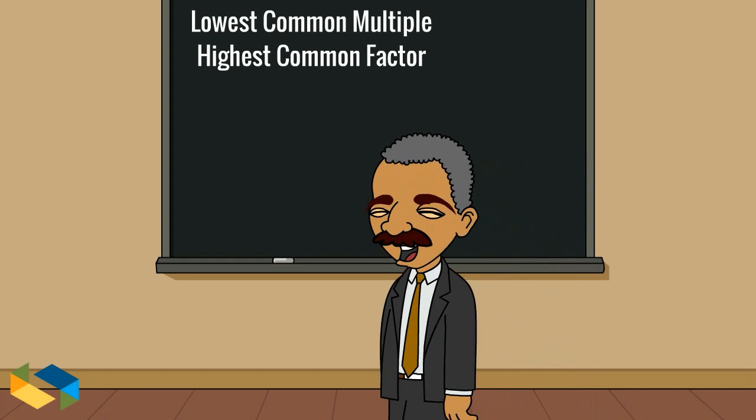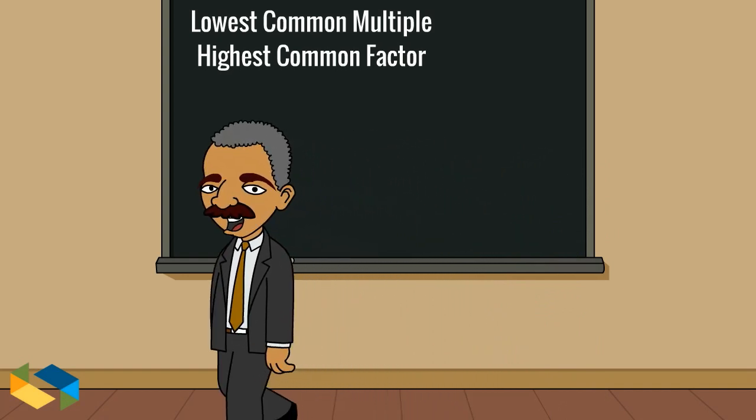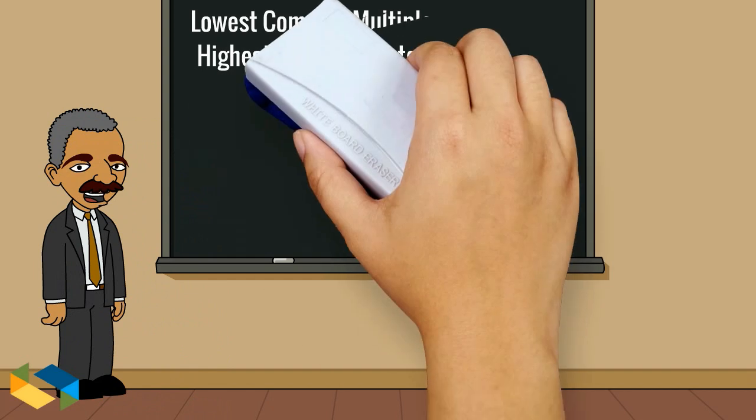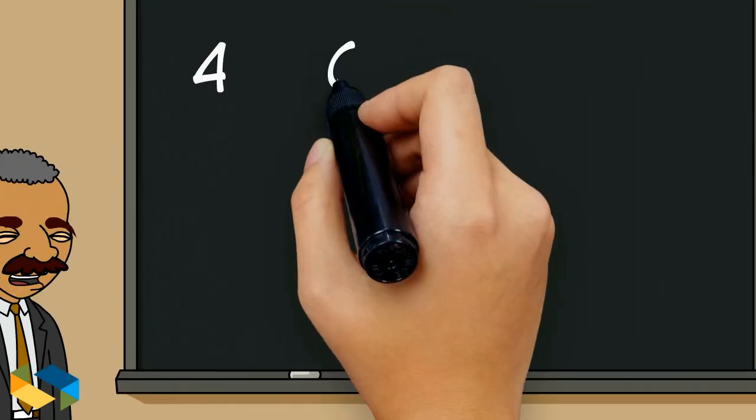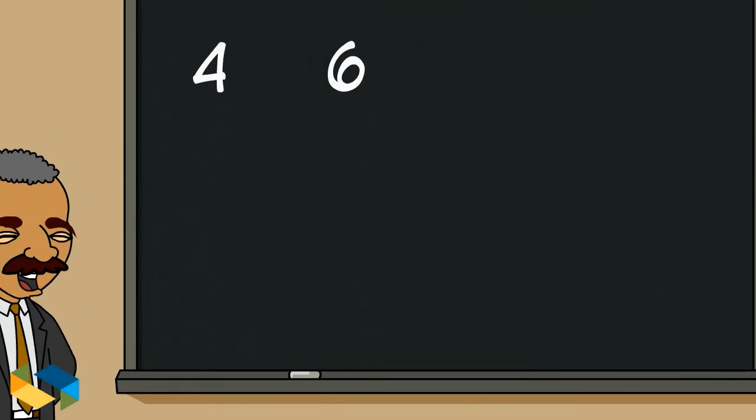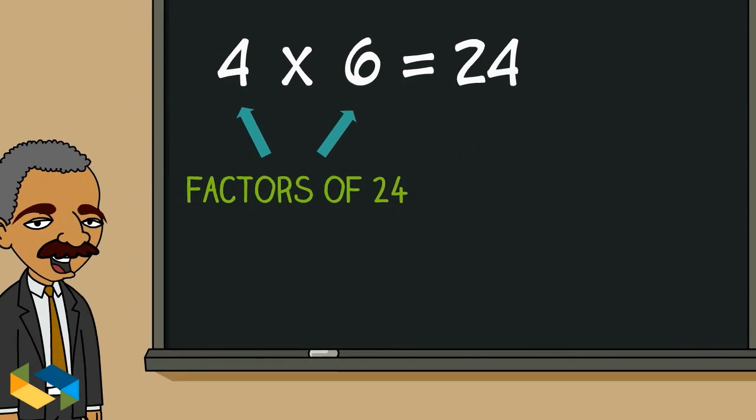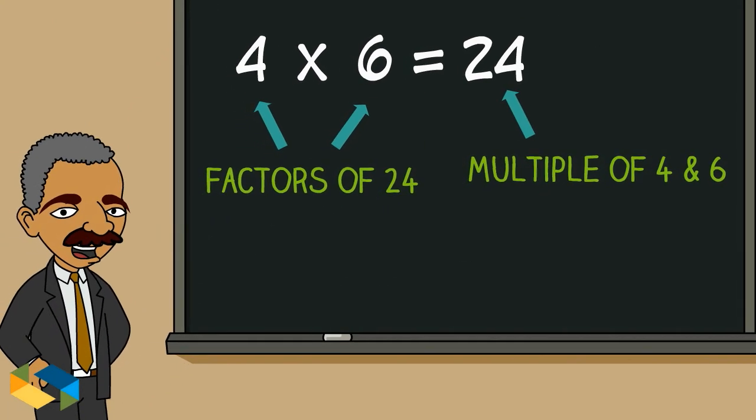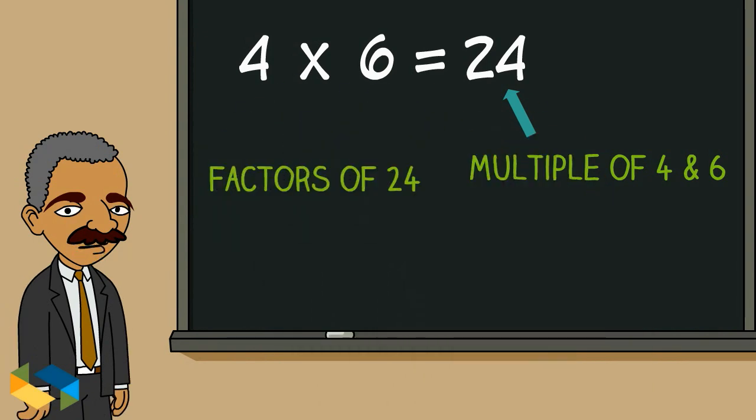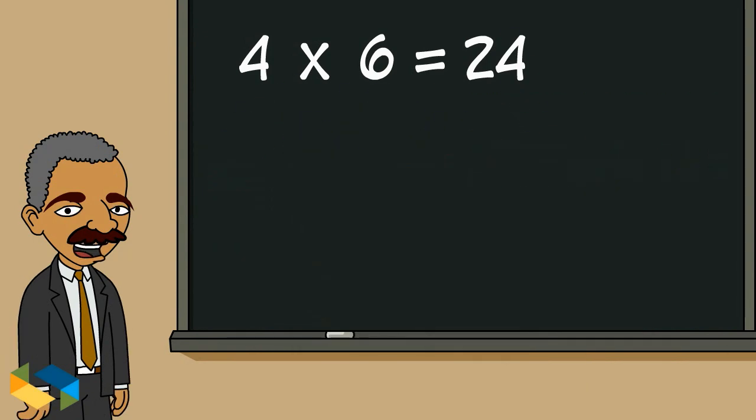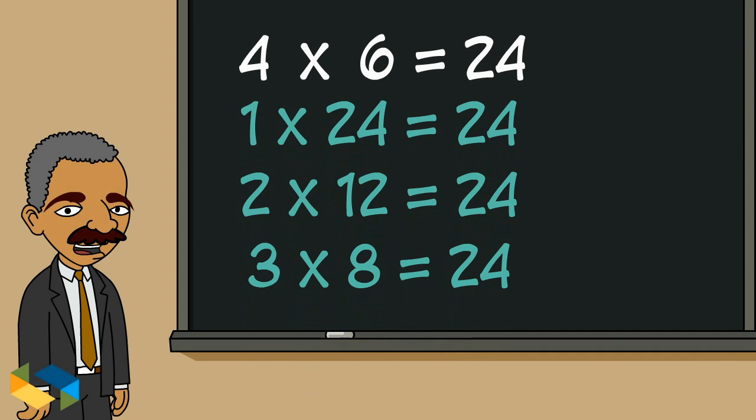So let's begin first by understanding what we mean by a factor and what we mean by a multiple. Look at these two numbers 4 and 6. Multiply these, their product is 24 as you can see. 4 and 6 are factors of 24, and in turn 24 is a multiple of 4 and 6, just as these other numbers have 24 as their multiple.